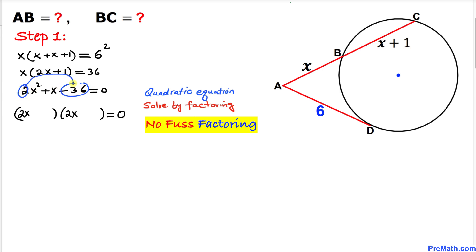2 times negative 36 equals negative 72, written on top. The middle coefficient of x is 1 by default, written at the bottom. Let's find the factors of negative 72. Our factors are negative 8 and positive 9. Multiplying these gives negative 72, and adding them gives 1.